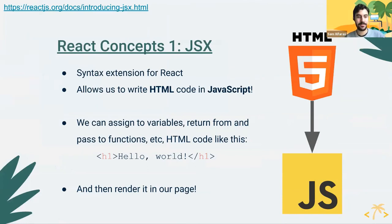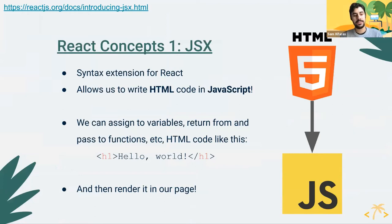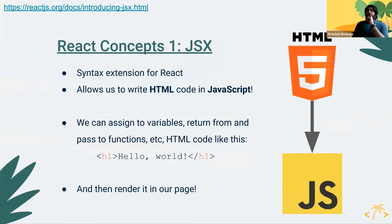Hey guys, I'll be taking over the React review here. So the first concept we want to review is JSX. It's a syntax extension for React — that's what differentiates React from normal JavaScript. It allows us to write HTML-style code directly in our JavaScript. We can add any HTML tag we want, and we can also add our own components in that same style. That allows us to logically arrange our code and have it rendered on the page.